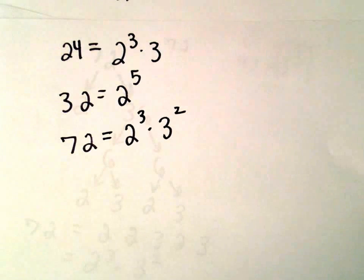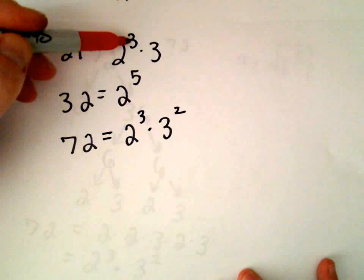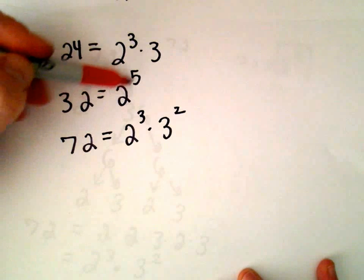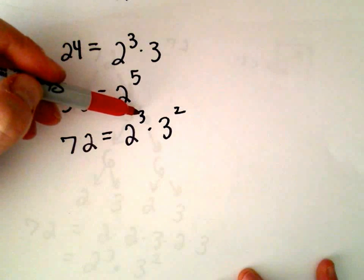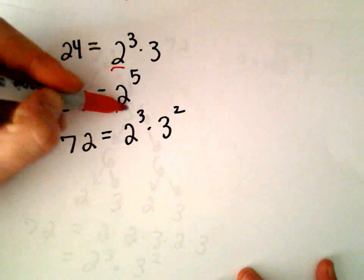So what do we do now? We look at everything that's in common. Notice our first number has 2 to the third power. We've got 2 to the fifth power and 2 to the third power. They all have a 2 in common.